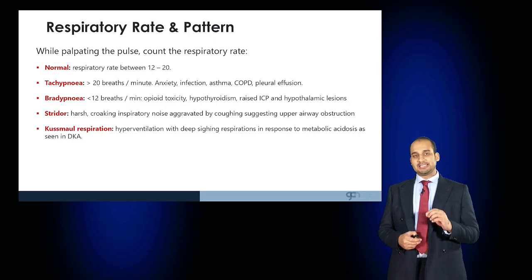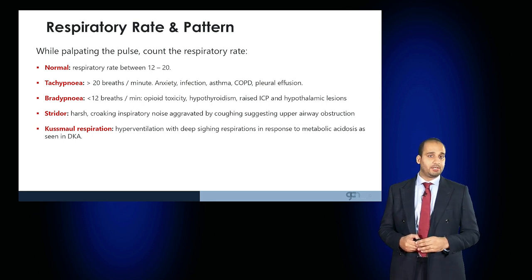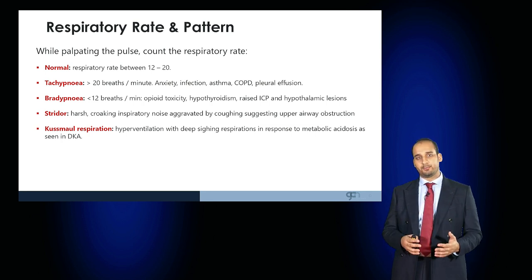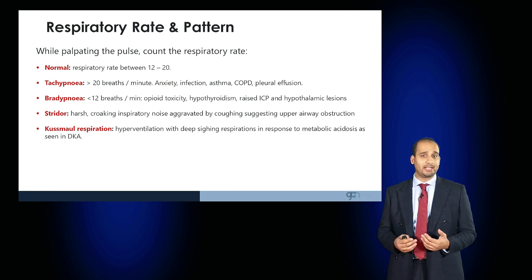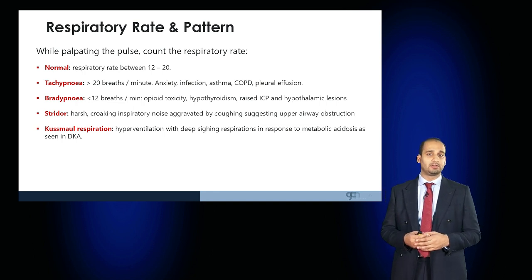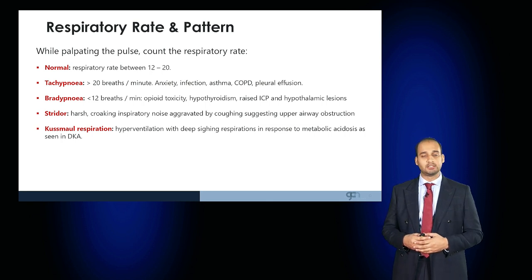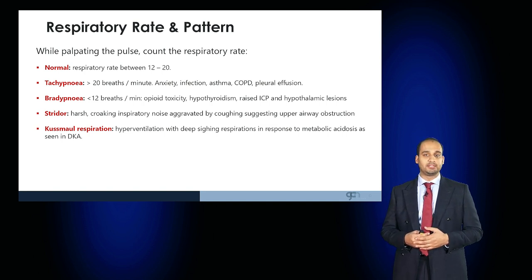While examining the pulse, also observe the respiratory rate and pattern. Normal respiratory rate is between 12 and 20. The patient may be tachypnoeic or bradypnoeic. Tachypnoea can be physiological during anxiety or exercise, but can also be a result of chest infection, asthma, COPD, or pleural effusions. Bradypnoea — less than 12 breaths per minute — can be a result of opiate toxicity, hypothyroidism, raised intracranial pressure, or hypothalamic lesions.